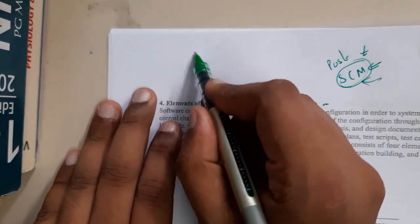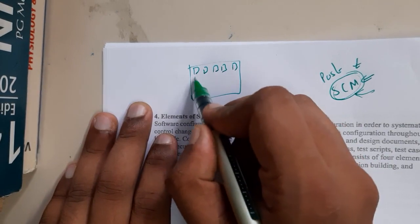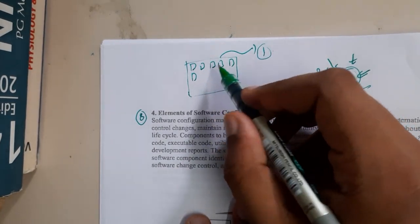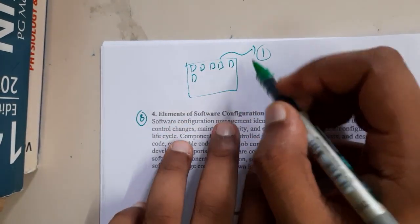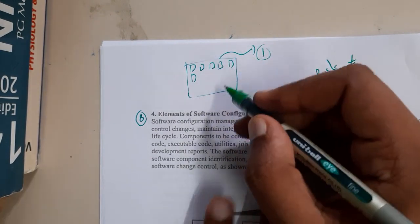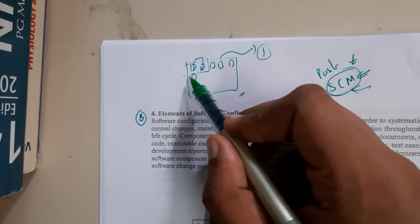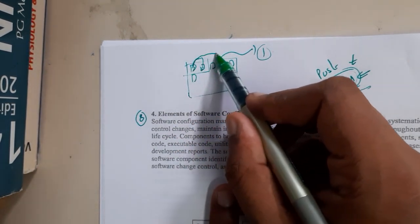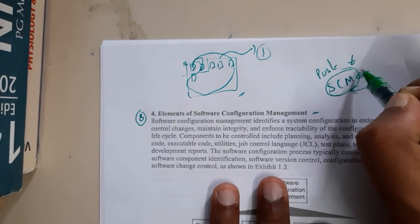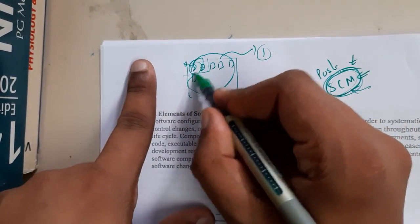Assume there is a huge office with 100 employees all working on a single project. The project is divided so that each module doesn't collide with others. But someday they need to combine all their code. It's complex for any one developer to understand all 99 other people's code and combine them — that's why we have the SCM, the software configuration manager.